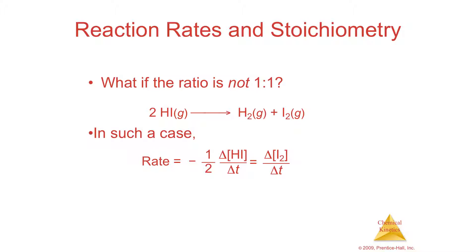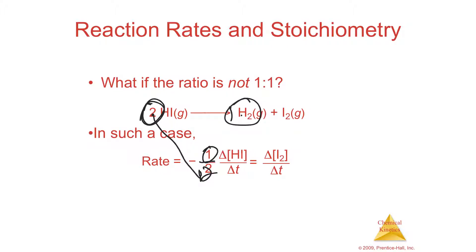Here's the peanut butter sandwich analogy again. In this case, if you have hydroiodic acid — two of these molecules to make one mole of hydrogen gas or one mole of iodine — it's a two-to-one ratio, like two pieces of bread to one sandwich. So it can't be one-to-one: it's one-half to one. You take the coefficient of the stuff going away and place it on the bottom of a fraction.